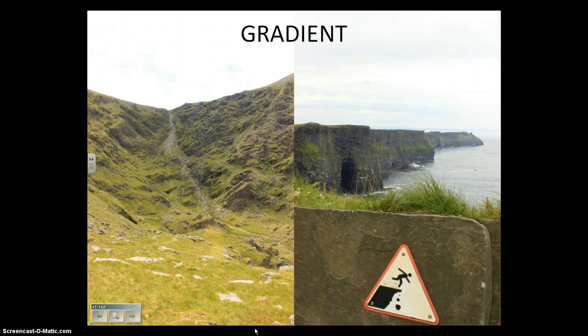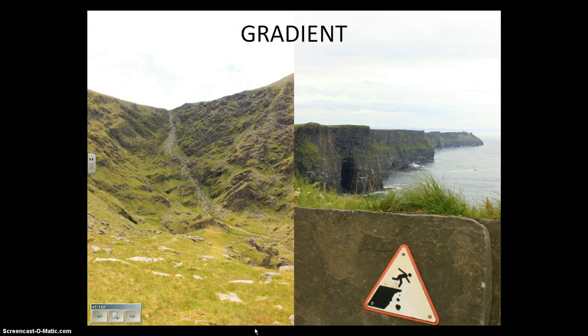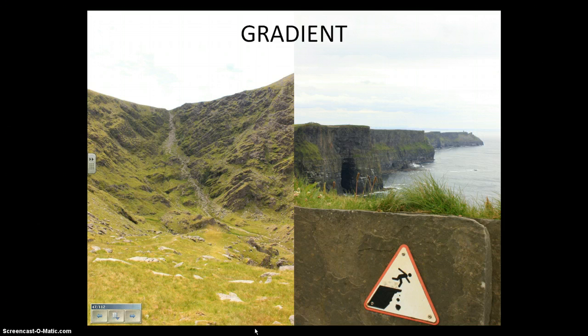Gradient essentially means slope. In math you'll probably hear it as rise over run, the difference in the y over the difference in the x. But it's the same thing in earth science - it's simply the slope of a landscape. It can also be used in other ways and we'll get into that a little later.